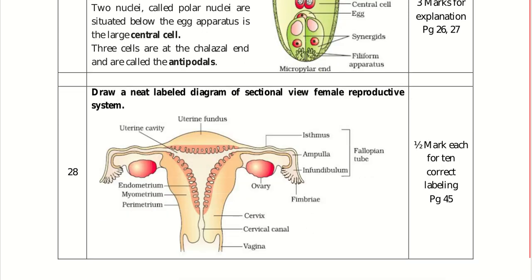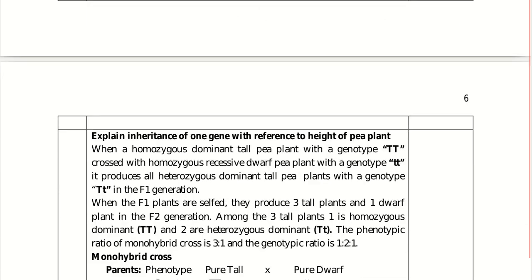Draw a neatly labelled diagram of the sectional view of the female reproductive system. It consists of the vagina leading into the cervical canal and cervix. The uterus has three layers: inner endometrium, middle myometrium, and outer perimetrium. Label also: ovary, uterine fundus, uterine cavity, isthmus, ampulla, infundibulum — together forming the fallopian tube — and finger-like fimbriae. Half mark each for ten correct labellings.